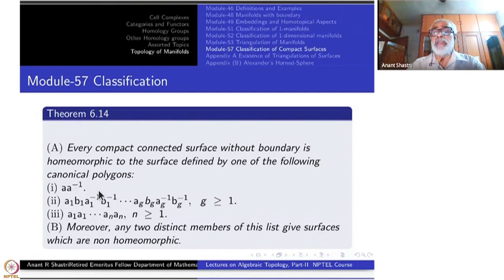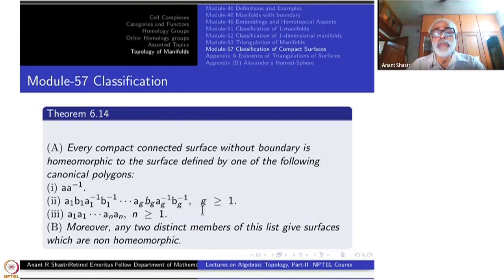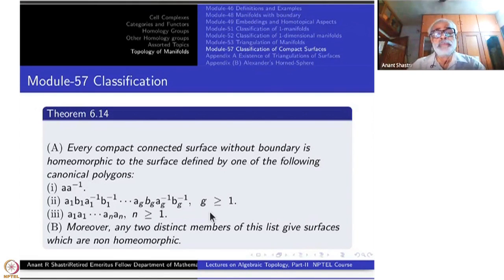The first canonical polygon is AA⁻¹. The second sequence is A₁B₁A₁⁻¹B₁⁻¹, A₂B₂A₂⁻¹B₂⁻¹, and so on, up to AₘBₘAₘ⁻¹Bₘ⁻¹ where g is greater than or equal to 1. The third sequence is A₁A₁, A₂A₂, A₃A₃, and so on, AₙAₙ where N is greater than or equal to 1.